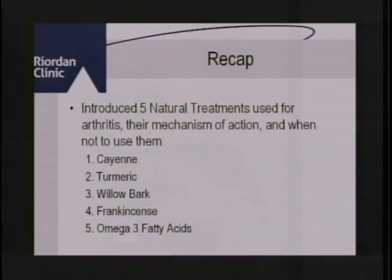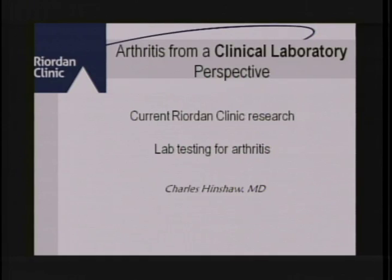So to summarize, five natural treatments for inflammation: cayenne, turmeric, white willow bark, frankincense, and omega-3 fatty acids. When I'm choosing treatments for patients, I never see a patient just with arthritis — they always have something else going on. So I look at which herbs would address the most ailments at once, and that's how I choose treatment. Now I'm going to introduce Dr. Henshaw, who will give us a clinical laboratory perspective.